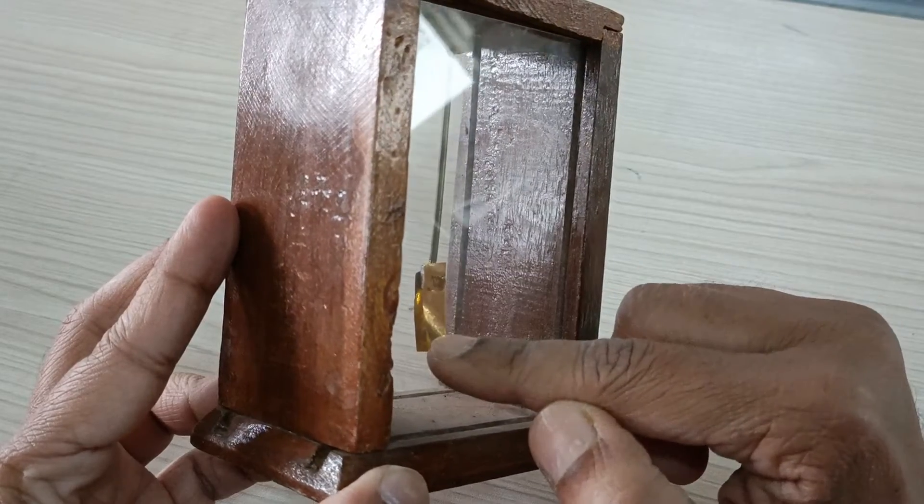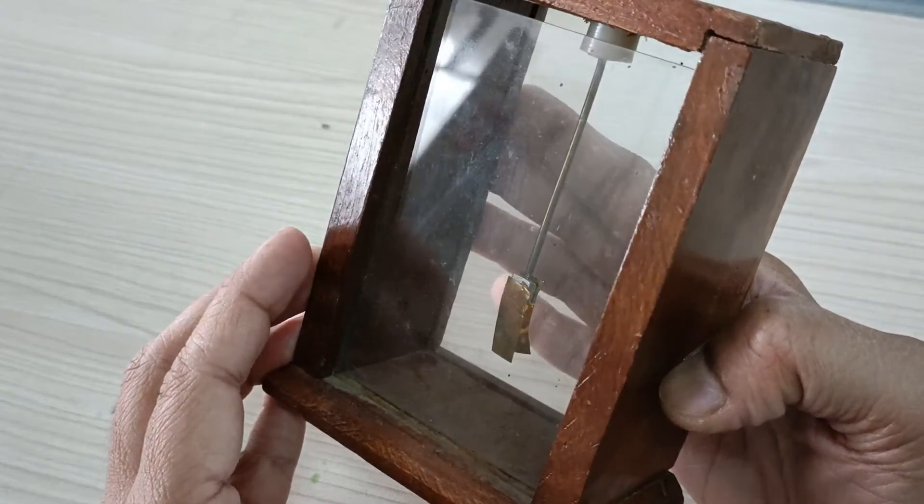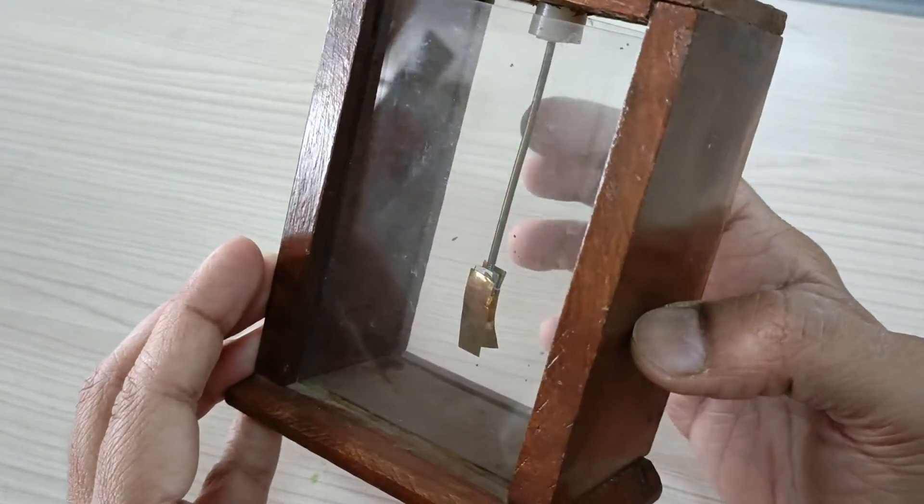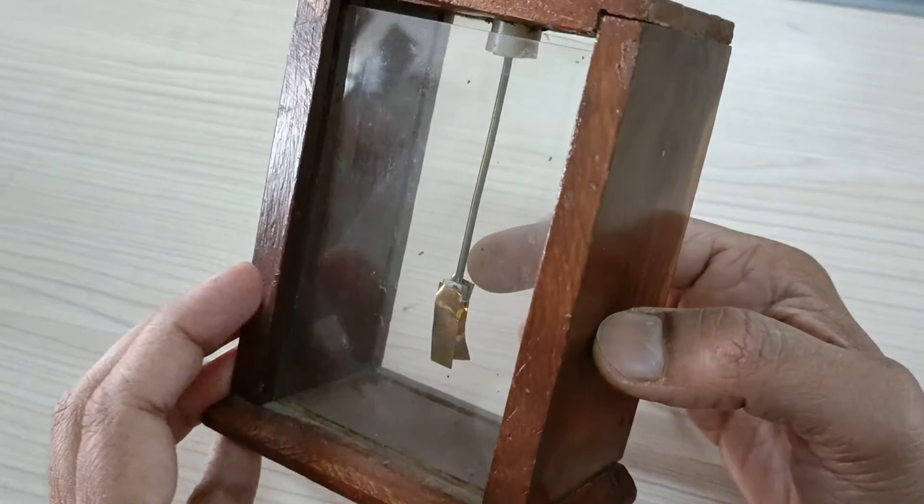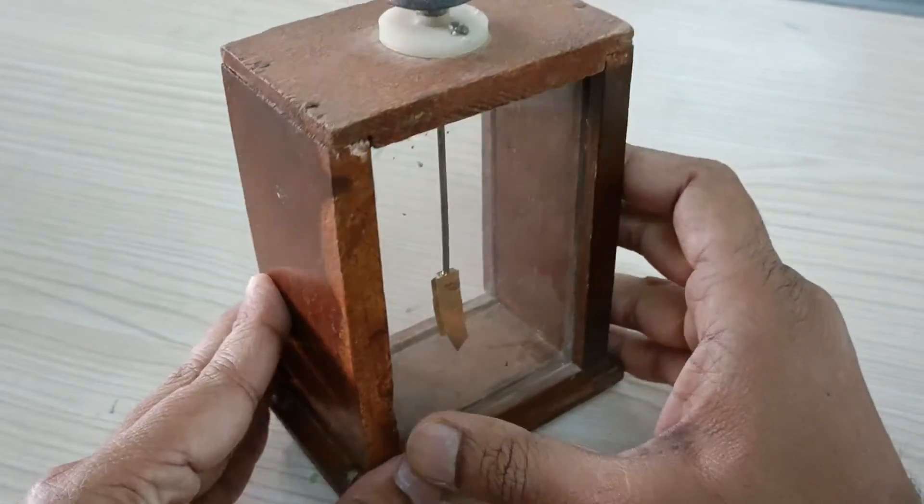These are a pair of gold leaves attached with a rod. The rod is connected at the top with a brass cap. The whole apparatus is kept in an insulated wooden box so there is no air interference with our experiment.